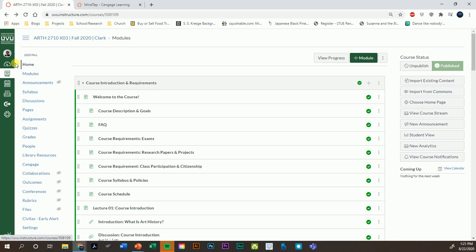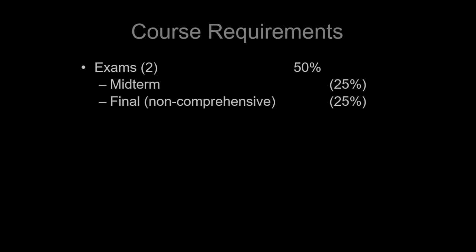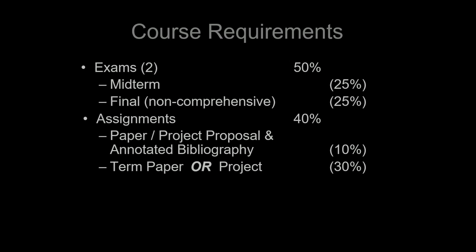Let's go back to our PowerPoint. When we start talking about course requirements, they're pretty simple. Right off the bat, you have two exams — a midterm and a final. The course is broken down into two parts: the first part covers prehistoric up through classical art, covered in the midterm. Then after that, we go from Roman art to medieval art, covered on the final exam. The final is non-comprehensive — it only covers everything from the second half of the course. There are also assignments: a paper project — either a research paper or a research project that you can choose. You have to submit a proposal, and then there's class citizenship and participation.